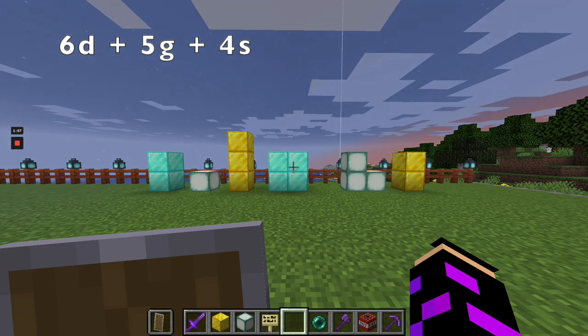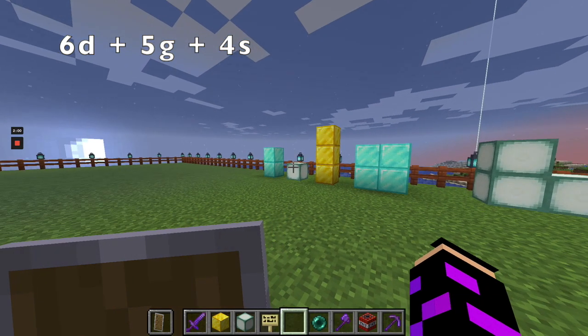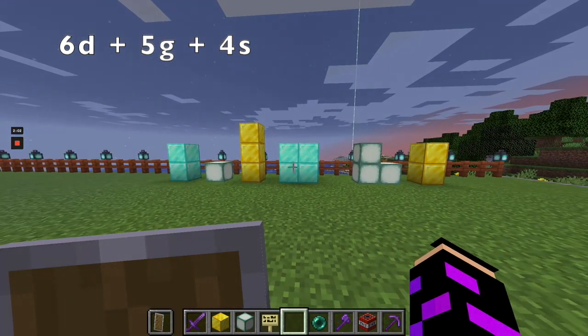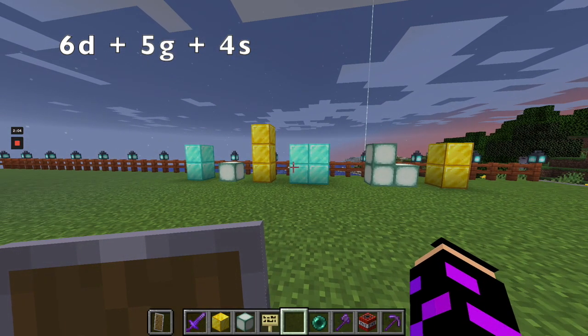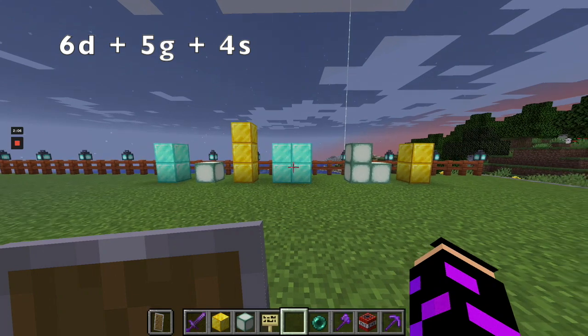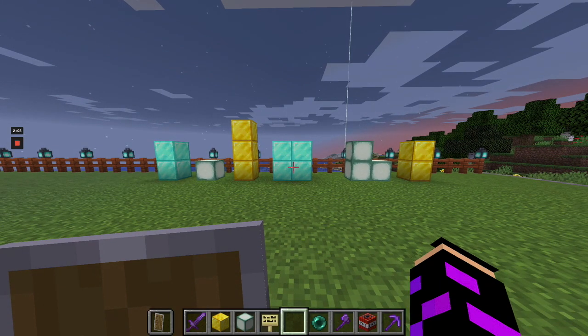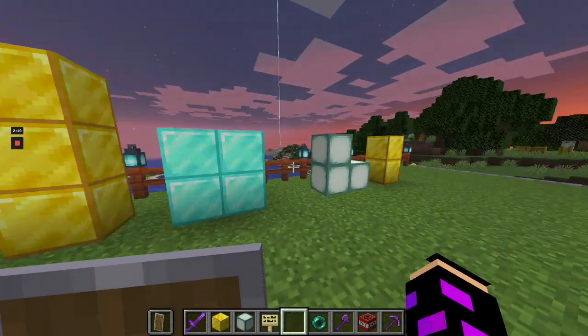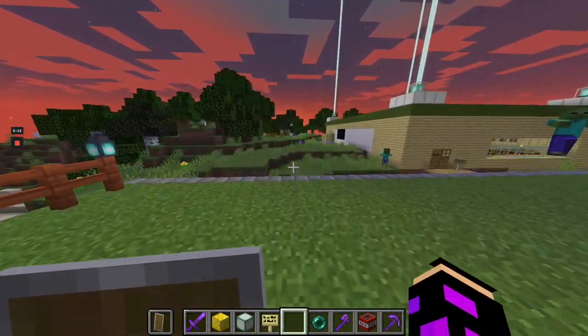Right, so if we combine it, we will have 2 plus 4, we'll have 6 diamonds. We'll have 5 gold and we'll have 4 sea glass. Awesome. Let's try that with one more kind of experiment.